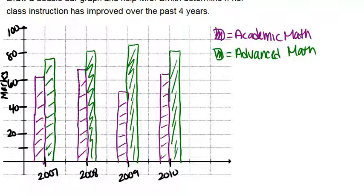The question was: did Mrs. Smith's instruction improve over the past four years? It's a little hard to say. For academic math, scores went up, then down, then up again, so it's hard to know what that was based on — there are lots of factors affecting grades. For advanced math, scores went up for two years then down a little bit, but overall were trending up. So perhaps her instruction has improved, but collecting more data or surveying students would help get a better sense of what really happened.